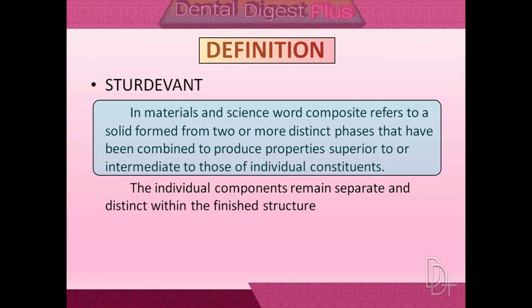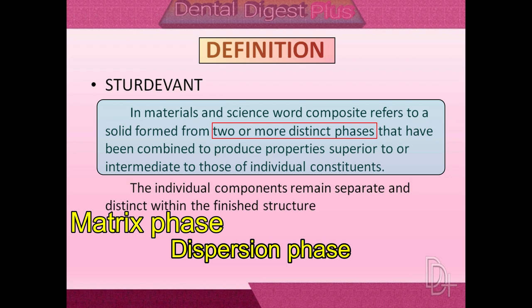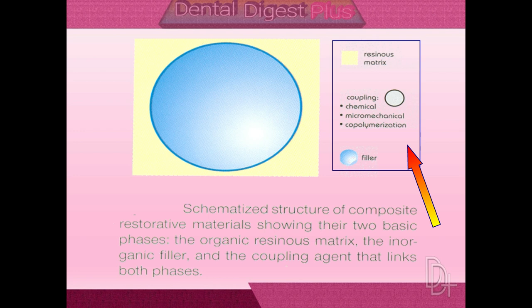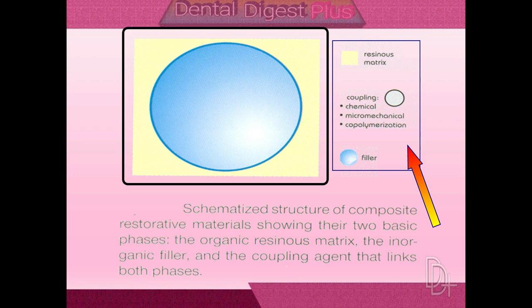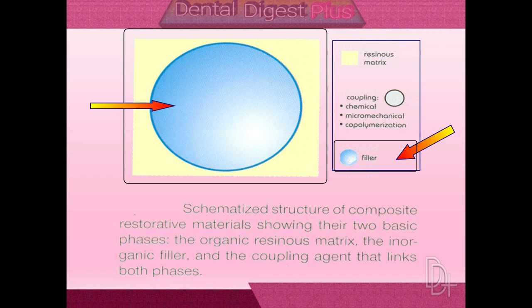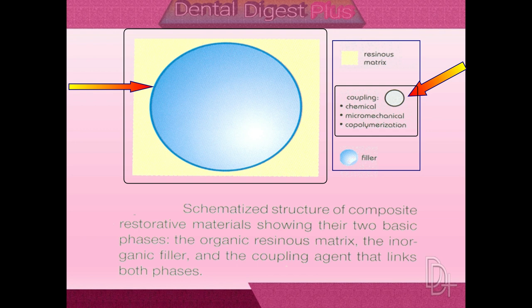Composite is like a solid material which has two or more phases: matrix phase, dispersion phase, and interfacial phase, combined to produce a better quality product with desired properties. The term composite originated in the field of material science. From a physical or mechanical point of view, a composite is a material consisting of two or more components chemically bonded together to provide overall properties superior to those of the individual constituents. Composite resins generally have three phases: the matrix phase formed by the resins, the dispersion phase formed by the filler particles, and the interfacial phase formed by the coupling agents.